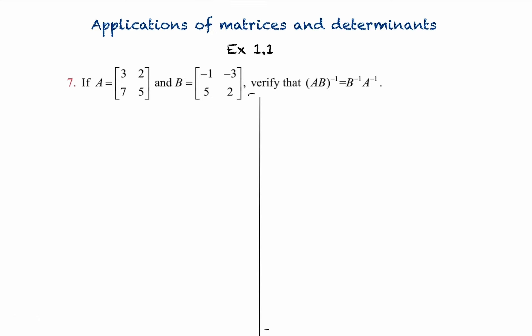Hello students. Class 12, Applications of Matrices and Determinants, Exercise 1.1, seventh sum. If A equals the matrix [3, 2; 7, 5] and B equals the matrix [-1, -3; 5, 2], verify that (AB)⁻¹ equals B⁻¹ into A⁻¹.